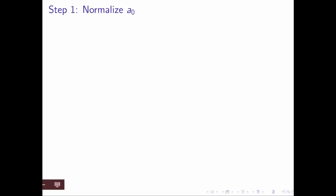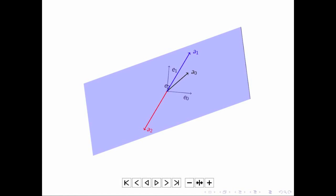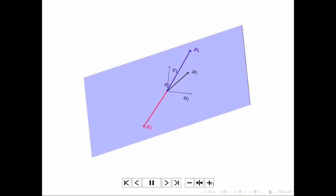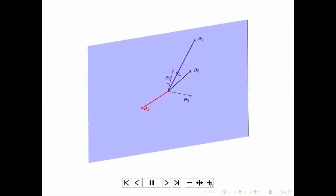Well, step one is to normalize A0. How do we visualize that? So here we visualize these three vectors, A0, A1, and A2. Now, they're a little bit hard to see until we start rotating this picture.